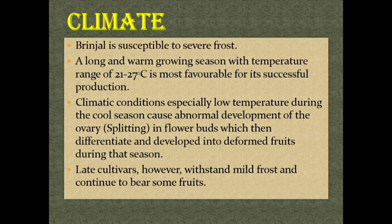Climate. Brinjal is susceptible to severe frost. A long and warm growing season with a temperature range of 21 to 27 degrees Celsius is most favorable for its successful production. Climatic conditions, especially low temperatures during the cool season, cause abnormal development of the ovary in flower buds, which then differentiate and develop into deformed fruits. Late cultivars however withstand mild frost and continue to bear some fruits.